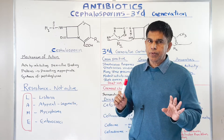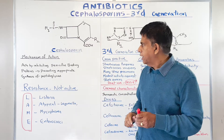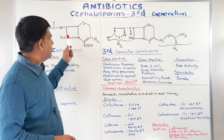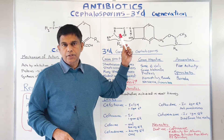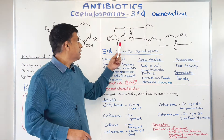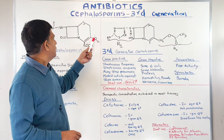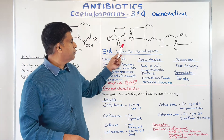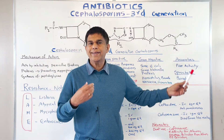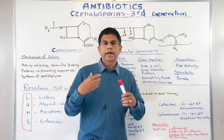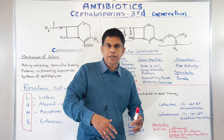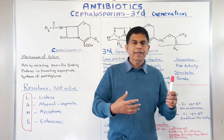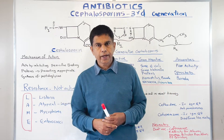Now let's look at the difference between cephalosporin and third generation cephalosporin. Look at the R structure — those two structures are what they usually modify. They modify R1 and R2 to make new drugs. Every generation — third generation, fourth generation — it's the R1 and R2 attachments they modify.